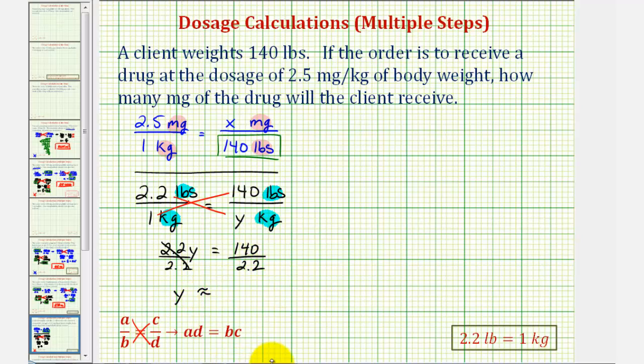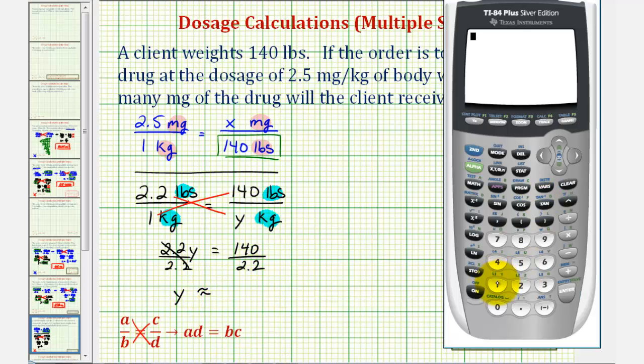Let's go ahead and use a calculator for this. So we have 140 divided by 2.2. Let's round this to two decimal places. We'll say 63.64.